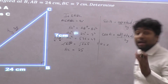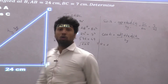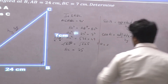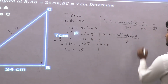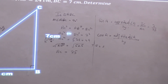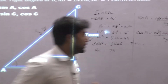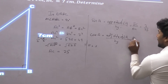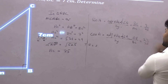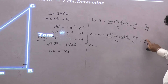This you should remember: S for sin, S for start — sin is always opposite side of angle A upon hypotenuse, and cos is always adjacent side of angle A upon hypotenuse. The adjacent side of angle A is AB. Since AC is the hypotenuse, cos A equals AB upon AC, that is 24 upon 25. So sin A is 7 upon 25, cos A is 24 upon 25.